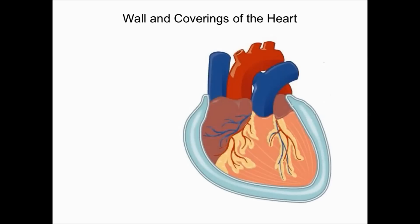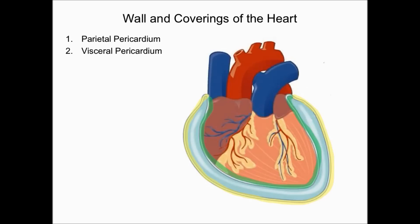The membrane surrounding the heart is called the pericardium, and because the pericardium is a serous membrane, it has four parts. The first part is called the parietal pericardium, the outermost membrane surrounding the heart. The next part is the visceral pericardium, the innermost membrane that actually touches the heart. In between is the pericardial cavity, and within the pericardial cavity you'll find pericardial fluid, which acts as a shock absorber and helps reduce friction.